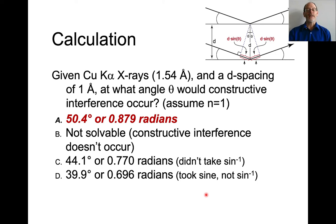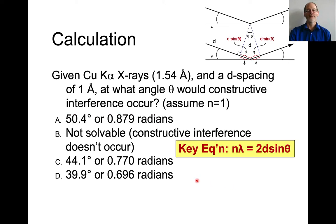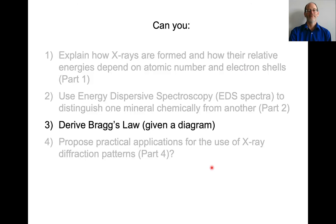Now it's possible to miscalculate this. If you calculated 44.1 degrees, that means you did not take the inverse sine — you just looked at the ratio. And if you calculated 39.9 degrees, that means you took the sine but didn't take the inverse sine. So going back to that equation, n·lambda = 2d·sin(θ), be sure you're taking lambda divided by 2d and then taking the inverse sine.